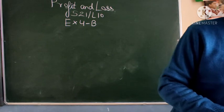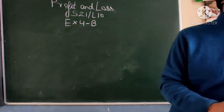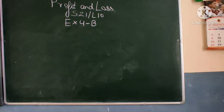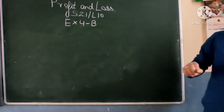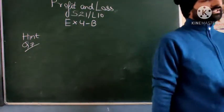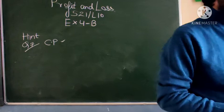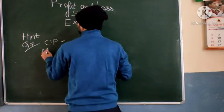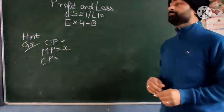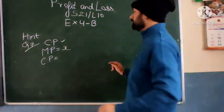Then see question number seven: cost price of a printer is Rs. 3400, which is 15 percent below the mark price. If the article is sold at a discount of 10%, find the mark price, selling price, profit and profit percent. This question I am giving you as homework. Try this one — I will give you a hint for it. Now see what it is telling: CP is given, and it is 15 percent below mark price. That means if MP is X, then CP is 85 percent of the mark price.